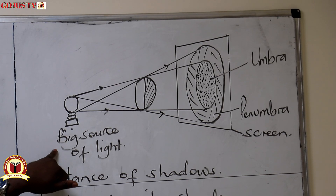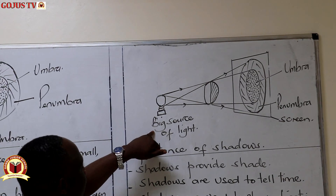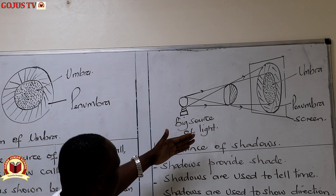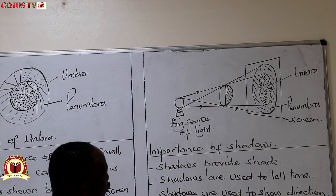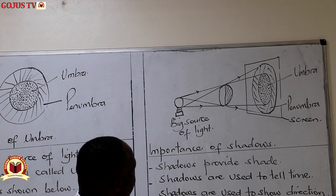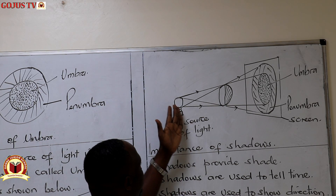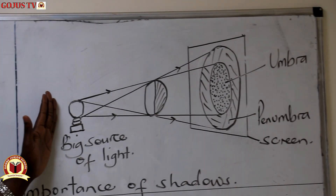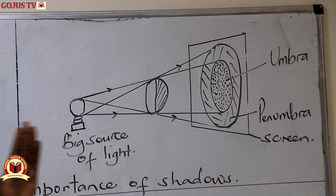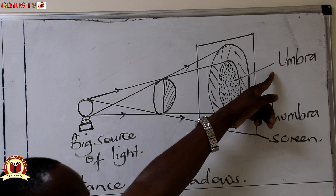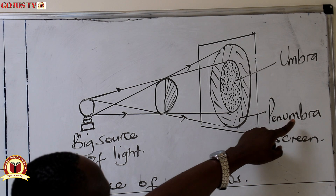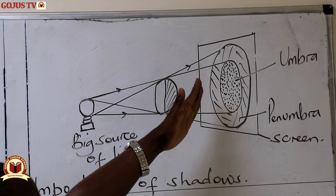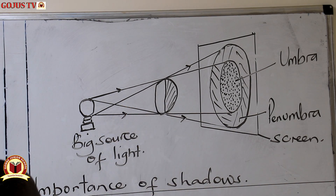As illustrated on the diagram, we have a big source of light. When the point source of light is bigger, the umbra — which is the darker region — will be surrounded by a partial shadow called penumbra, as shown on the diagram here. This is formed from a big point source of light.